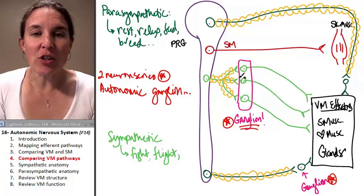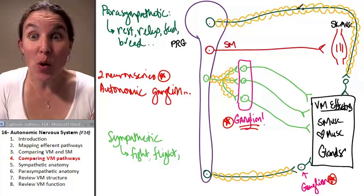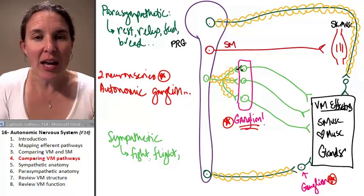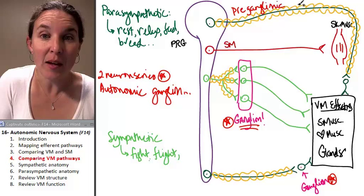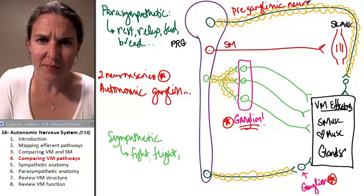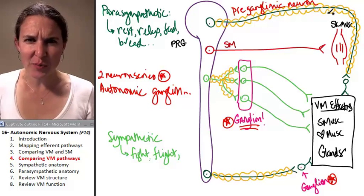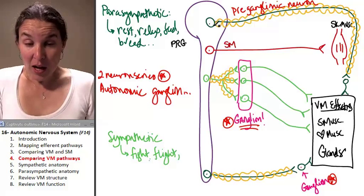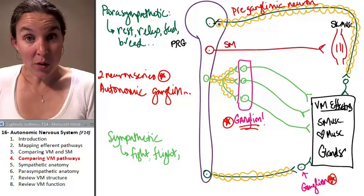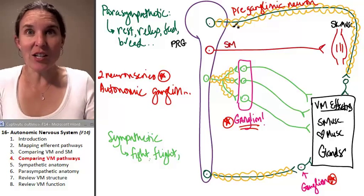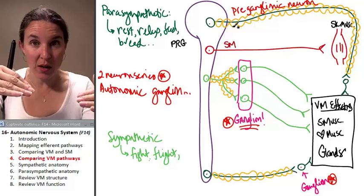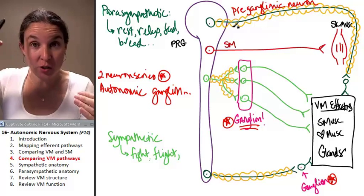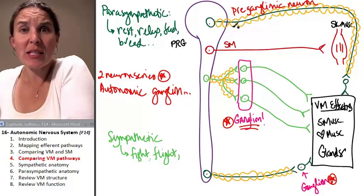The first neuron in the series in both situations is considered a preganglionic neuron. Does that make sense to you? The cell body is going to be found in the lateral gray horn of the spinal cord. The axon is going to travel out through the anterior root, up through the spinal cord, I mean the spinal nerve, and then out into the body.